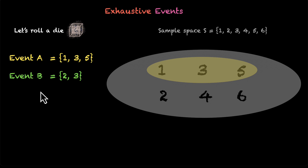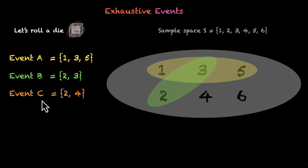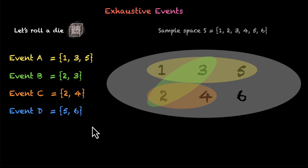Then we have event B which is 2 and 3, so this is our event B. Event C is 2 and 4, and event D is 5 and 6.